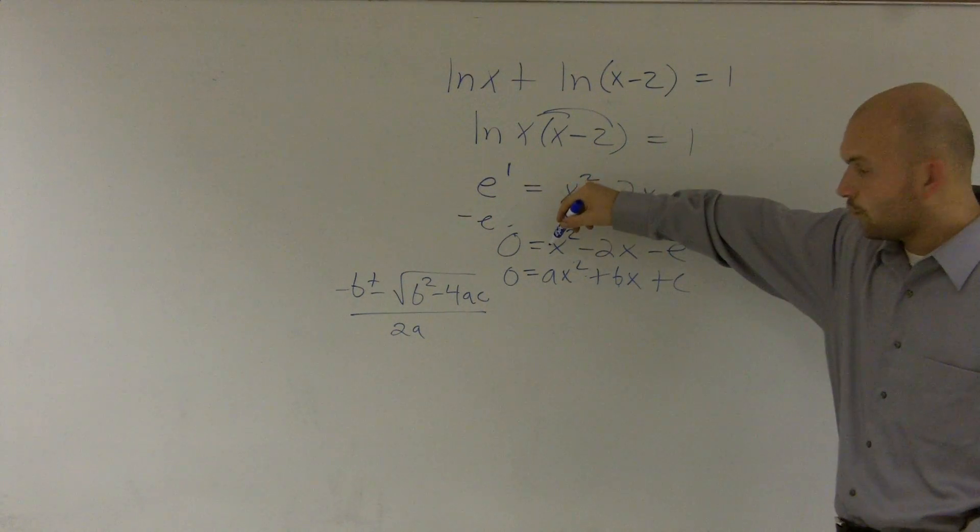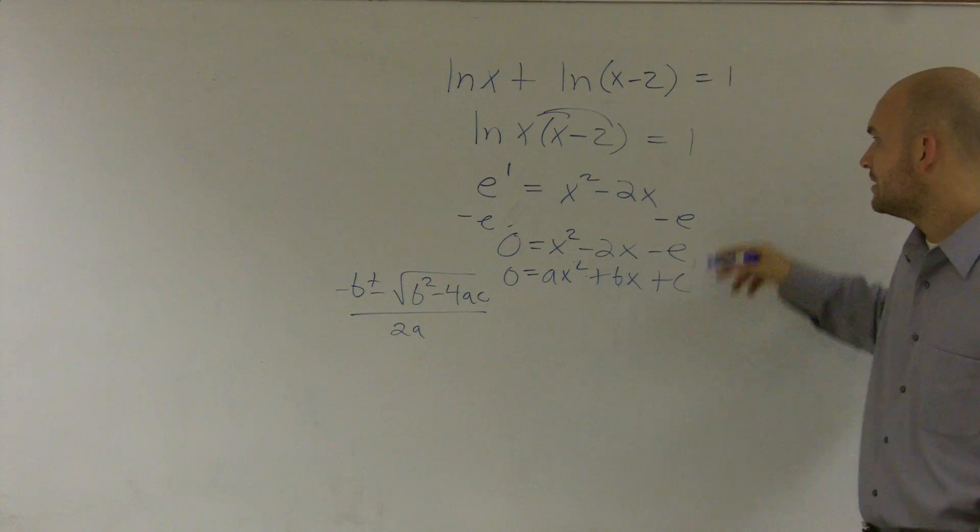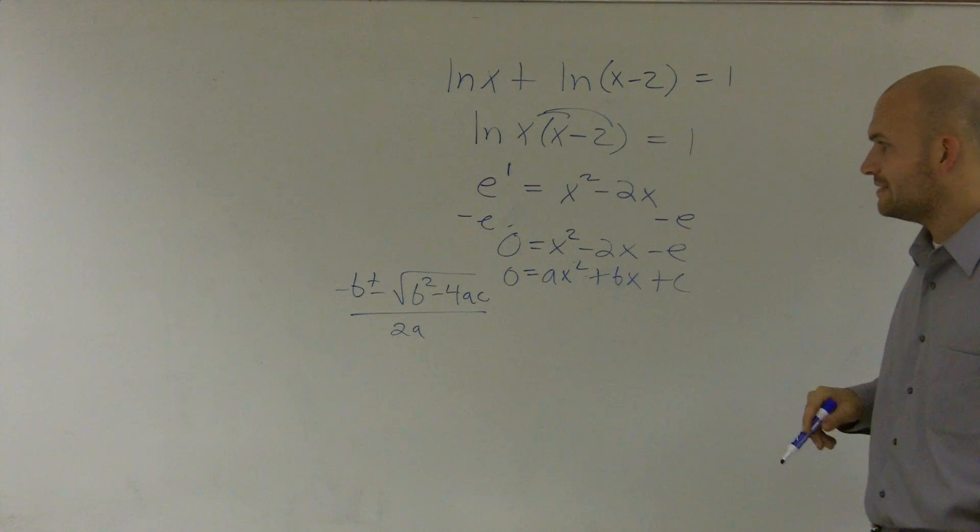So therefore, a is going to equal 1, because there's a 1 in front there. Negative 2 is going to be my b, and negative e will be my c.